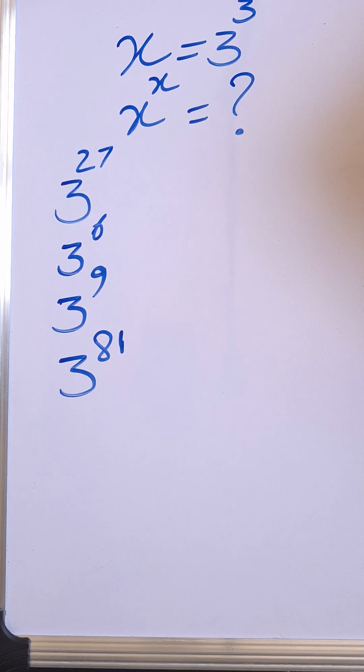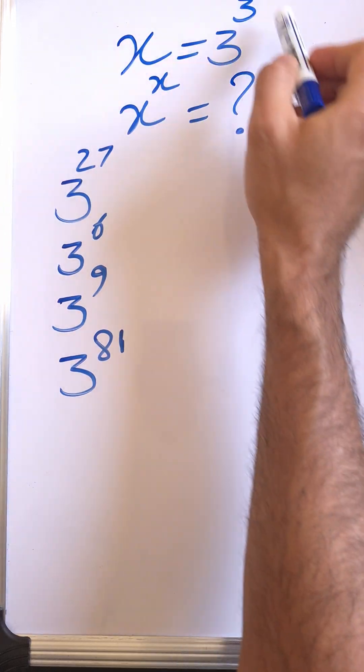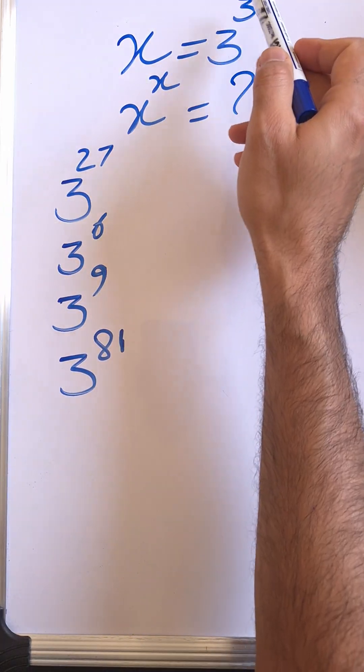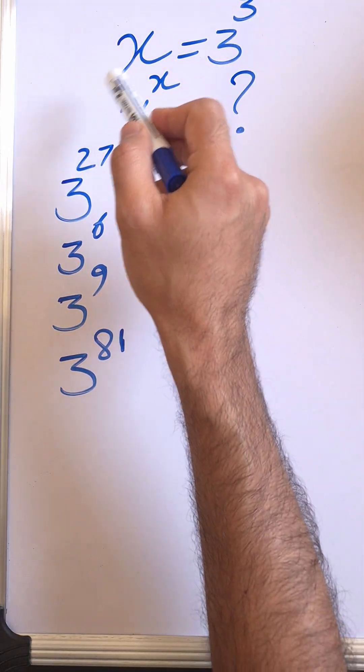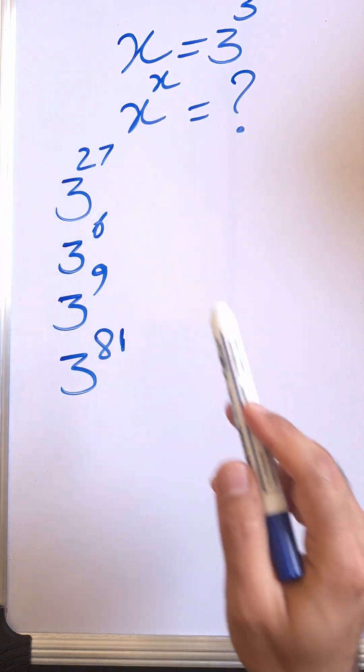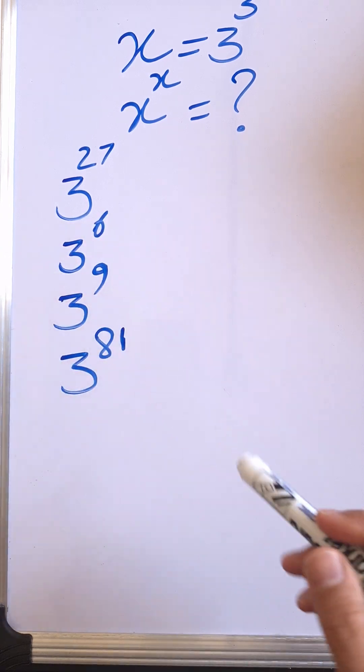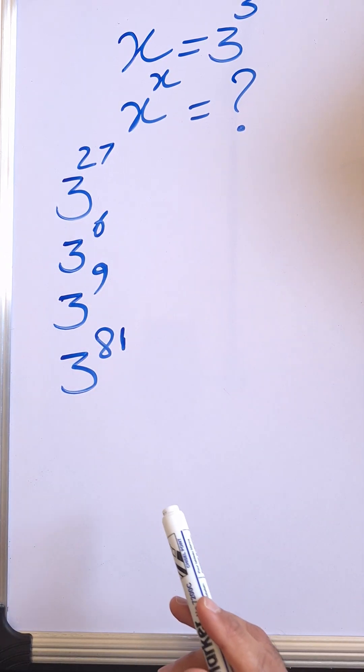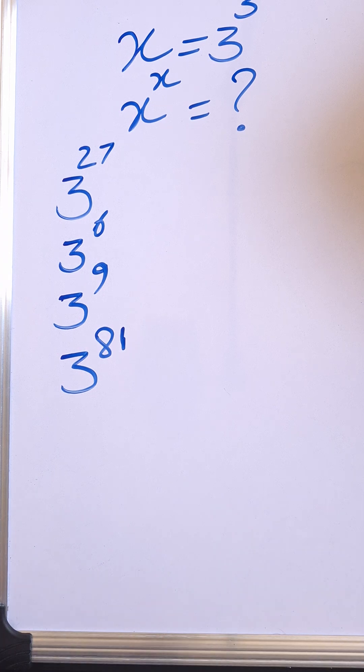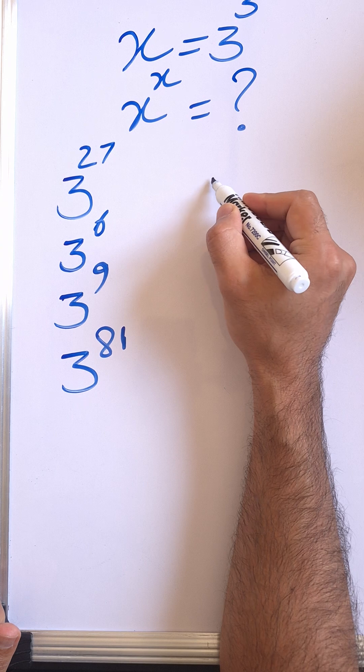So x equals 3 to the 3, or 3 cubed. What is the value of x to the x? We have the options: 3 to the 27, 3 to the 6, 3 to the 9, 3 to the 81. So let's work it out and substitute whatever we have here.